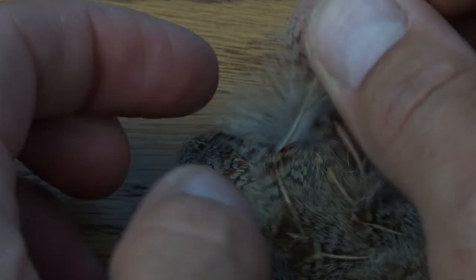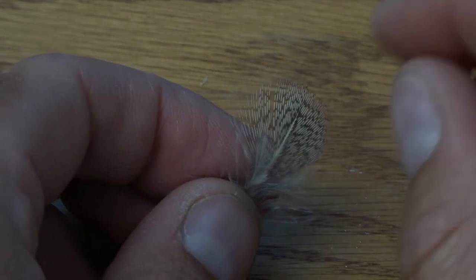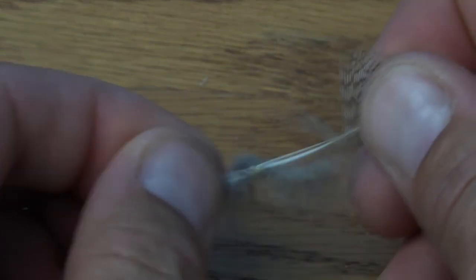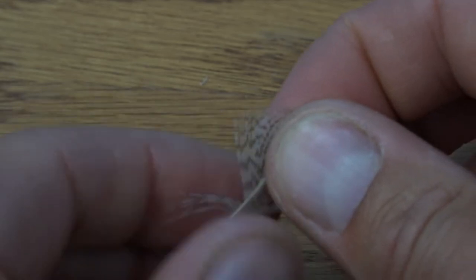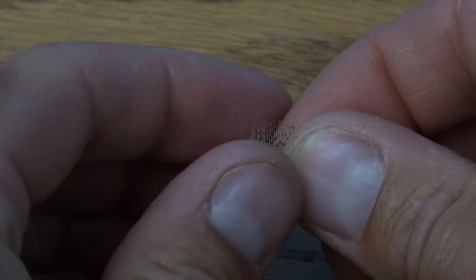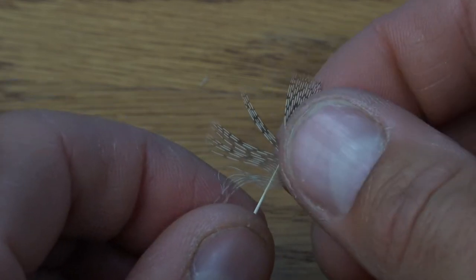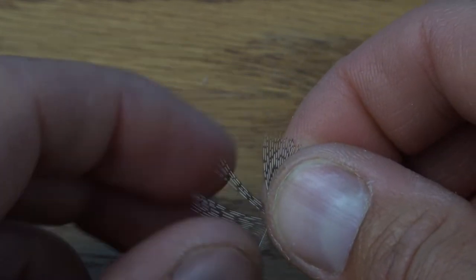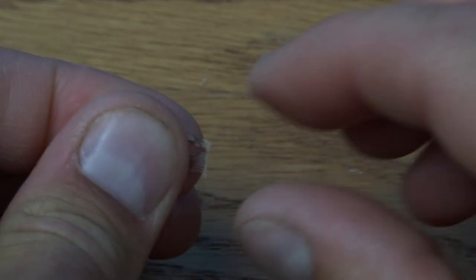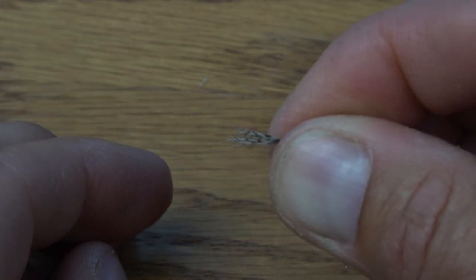Hungarian Partridge is used for the tail and soft tackle portions of this fly. Pluck a choice feather from the cape and remove any fuzzy butt-end fibers. Splay out the remaining fibers on one side of the feather to even the tips and then pull them off the stem. Keep that feather for the next fly.